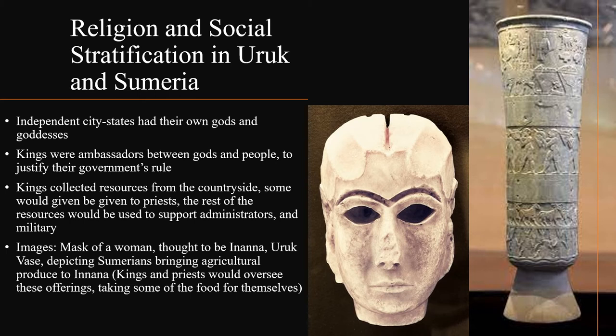The Sumerian cities were ruled independently, much like the city-states we would see in the Greek civilization millennia later. Each of these cities was ruled by a king. The kings were ambassadors between the gods and the people — they claimed that they ruled on behalf of the gods to justify their hegemony. The kings would have collected resources from the countryside. Some of these resources would be given to the priests; the rest would be used to support administrators, the military, and artisans. Here is an image of the mask of a woman — some think it's a mask of Inanna. Here is the Uruk vase, depicting Sumerian people bringing agricultural produce, namely livestock, to their kings and priests.